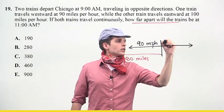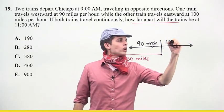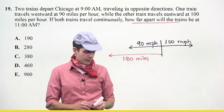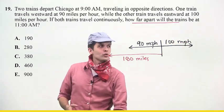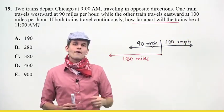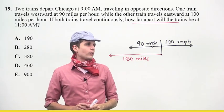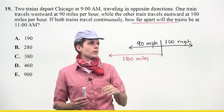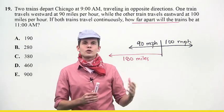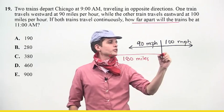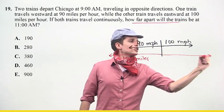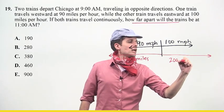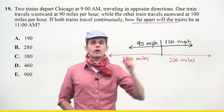Now let's imagine we're driving the other train, going eastward in the opposite direction at 100 miles per hour — slightly faster. After two hours, how far will we have traveled? I'm going 100 miles in one hour, so I double it — that's 200 miles total.